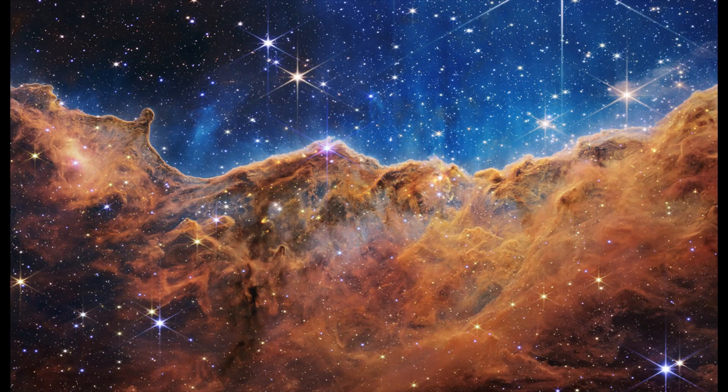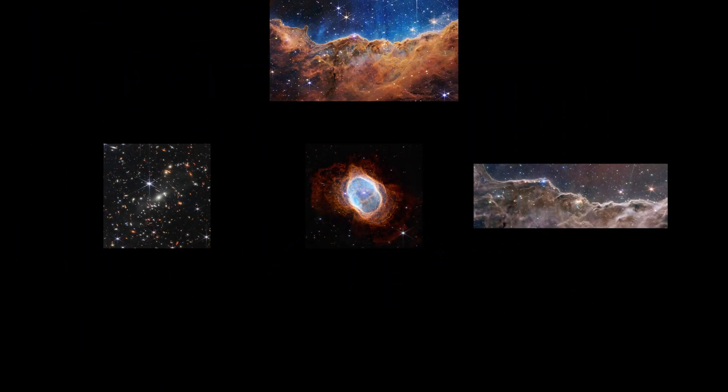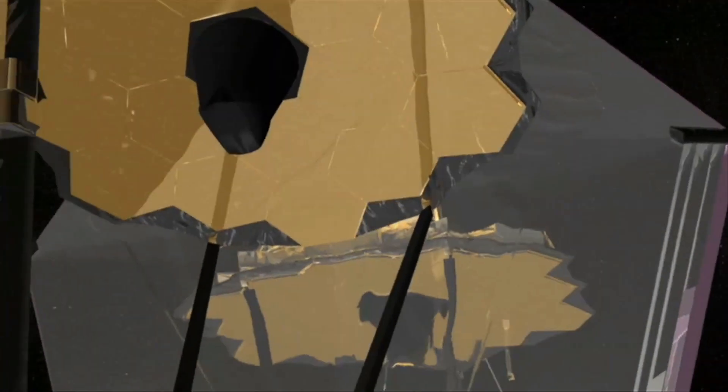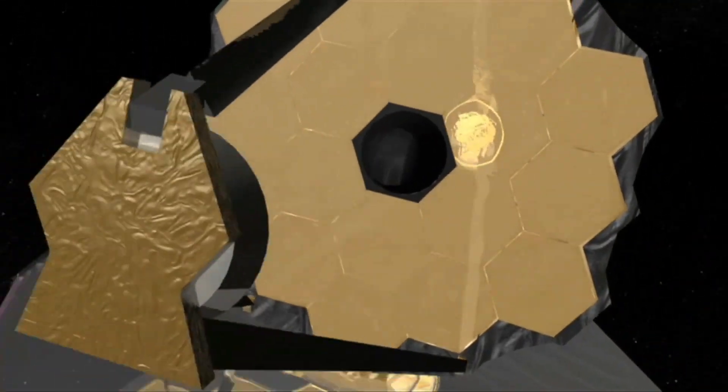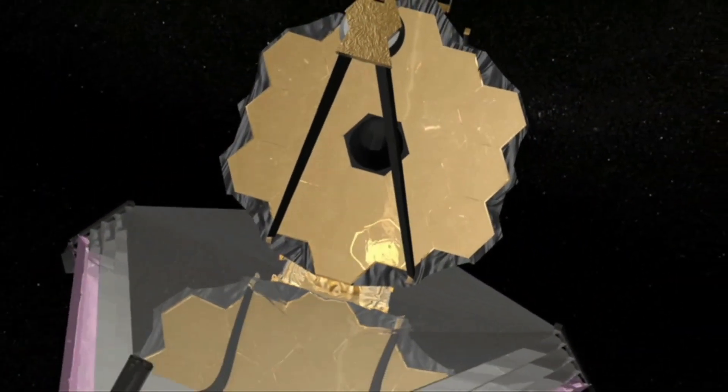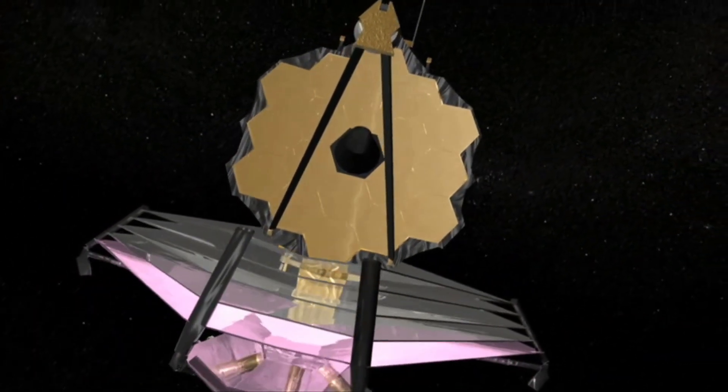The first photos from the JWST were designed to sort of flex JWST's muscles. Photos such as the Carina Nebula and Stephan's quintet are really attempts by the engineers at NASA to push the JWST to the limits from the very start. And as you can tell by the JWST design, the telescope's mirrors are broken up into smaller parts, allowing for super crisp photos.